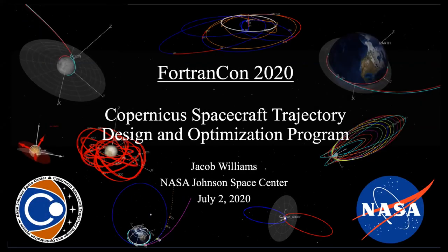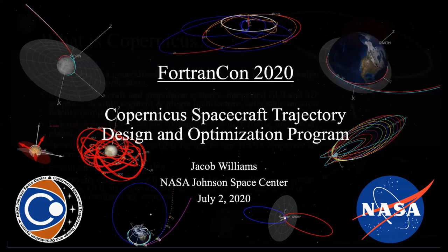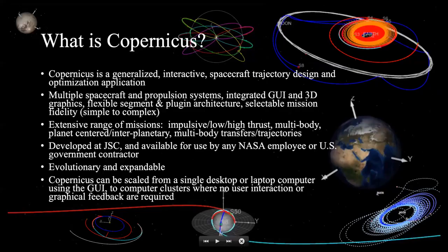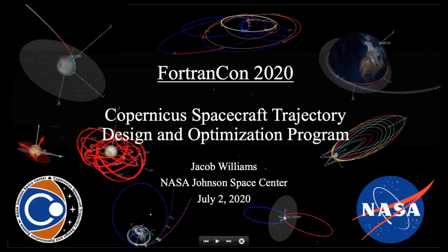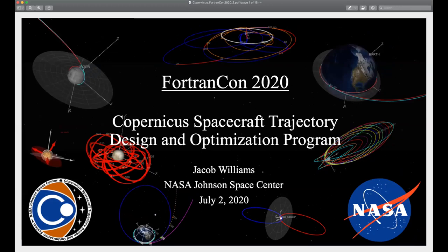My name is Jacob Williams. I work at the NASA Johnson Space Center. I'm going to talk about Copernicus. It's a spacecraft trajectory design and optimization program that we develop at JSC.